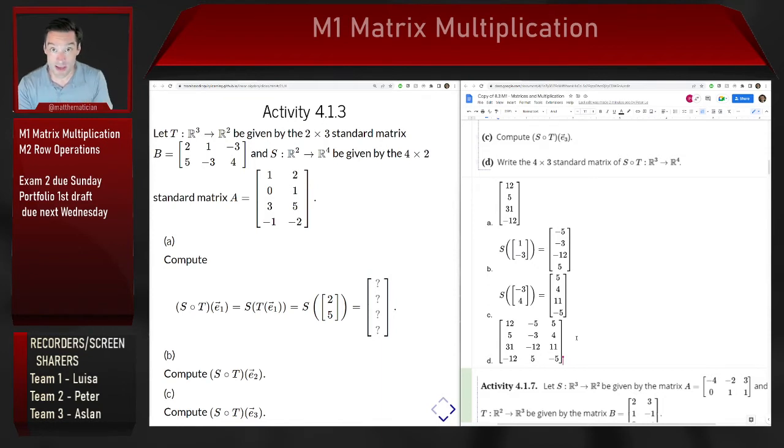What we say is that this is the product of the standard matrix for T, which we're going to call B, and the standard matrix for S, which we're calling A. So this is supposed to be the same thing as B times A.